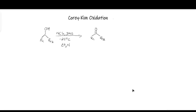around minus 25 degrees centigrade. This is a very convenient method for the oxidation of primary and secondary alcohols to aldehydes and ketones.